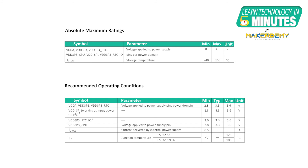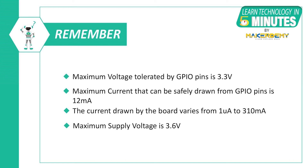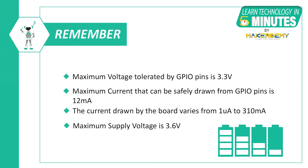Next come the electrical characteristics of the ESP32-S2. The absolute maximum ratings give the minimum and maximum operating voltages and temperature range. The recommended operating conditions specify that the input voltage range is 3V to 3.6V, with a recommended input voltage of 3.3V. The maximum voltage tolerated by the GPIO pins is 3.3V and the maximum current that can be drawn from them is 12 mA. The current drawn by the ESP32-S2 board varies from 1 microampere to 310 mA, and can vary significantly depending on the power mode. The electrical characteristics also cover AC-DC characteristics in detail.